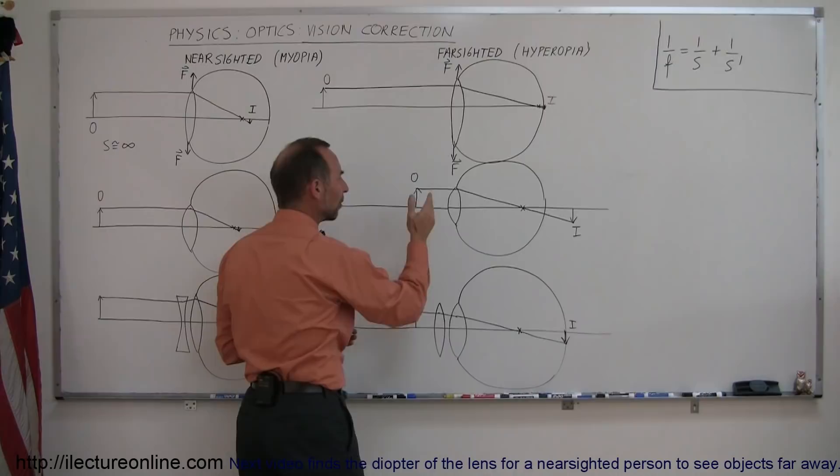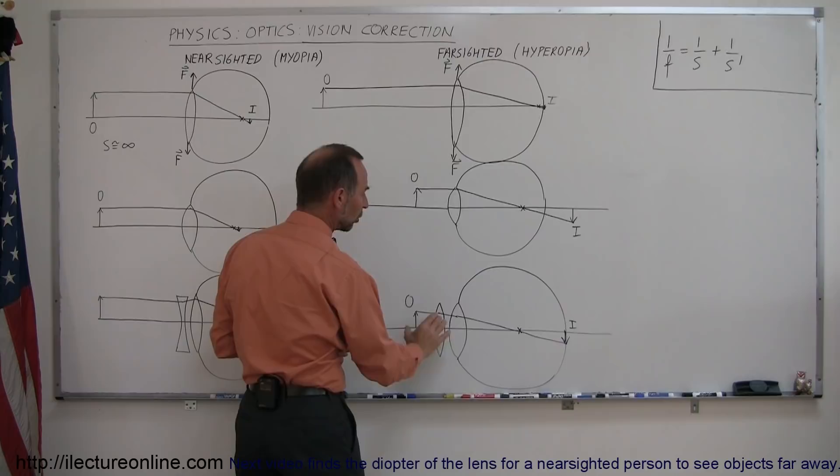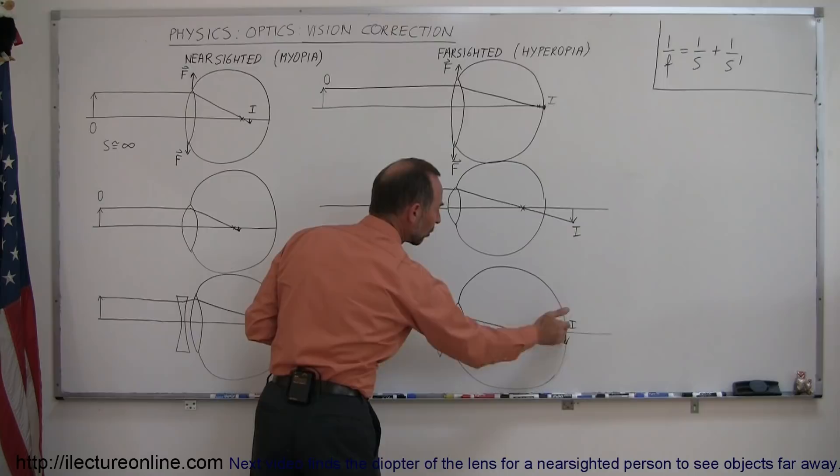So a second converging lens in front of the eyeball lens will cause the focal point to move further to the left, which will bring the image to the left as well, which then will fall right on the retina and then you'll see clearly.